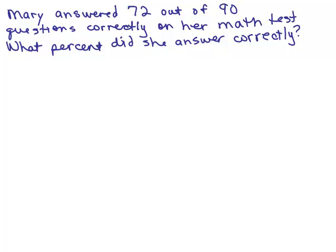So here's the first problem. Mary answered 72 out of 90 questions correctly on her math test. What percent did she answer correctly? The percent is always the amount over the base. So 72 out of 90 is 72 over 90. We're looking for the percent, so I'm going to write P is what we're looking for.